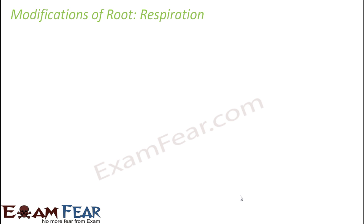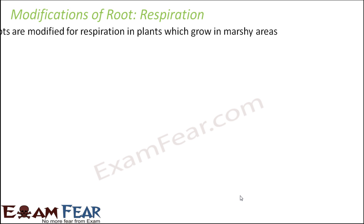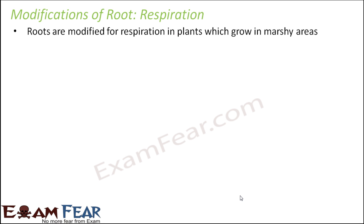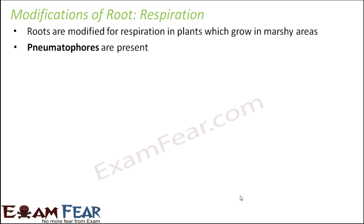Now let us look at the root modifications for respiration. How are roots modified to help in respiration? Roots are modified for respiration in plants which grow in marshy areas — muddy areas with comparatively more water. They have special structures known as pneumatophores, and due to the presence of these pneumatophores, these roots help in respiration.